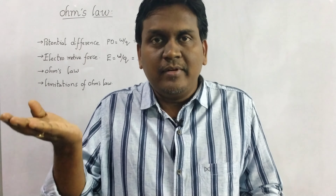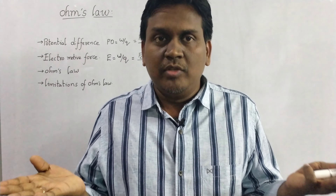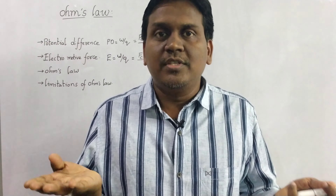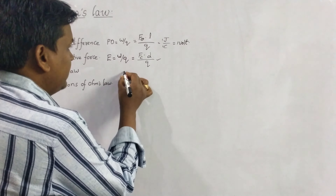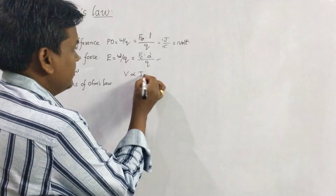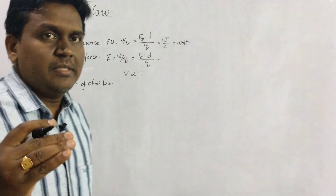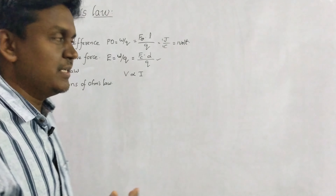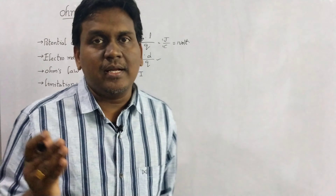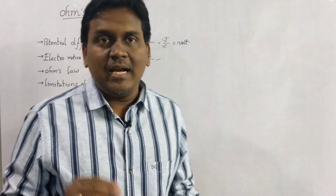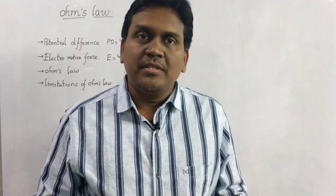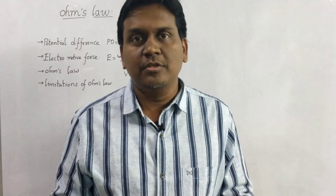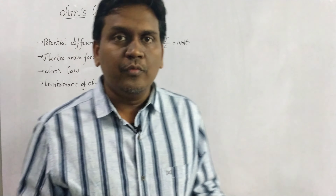Now coming to the electromotive force. This electromotive force can mainly be seen in a battery. In a battery, chemical force will do the work. This chemical force will move a unit negative charge from the positive terminal of the battery to the negative terminal of the battery. The work is done by the chemical force here. Electromotive force can also be defined as work done by a unit charge, so E equals W by Q.